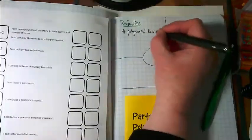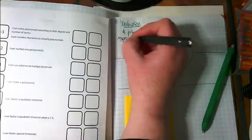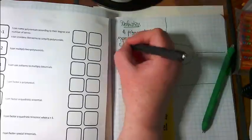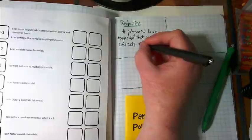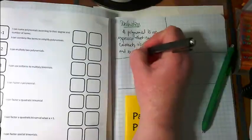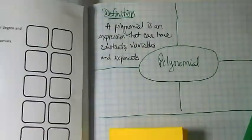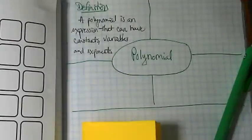The top left quadrant, we are going to put our definition. A polynomial is an expression that can have constants, variables, and exponents.